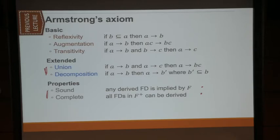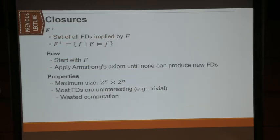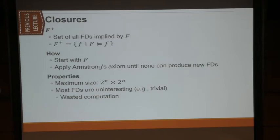Because of completeness, we can use the Armstrong axioms to find the closure of the functional dependencies. F+ can be derived solely by applying Armstrong axioms again and again until you cannot apply anything anymore. But this is not the most efficient algorithm — unless the question is asking what is F+, you are typically not going to be interested in F+. If you want to find the superkey, you don't even need F+, you just need the attribute closure. In fact, if you can find the attribute closure, you can find F+.